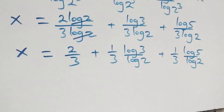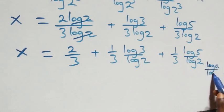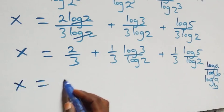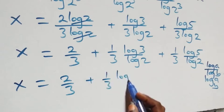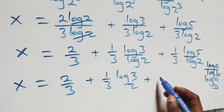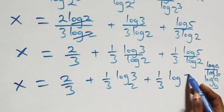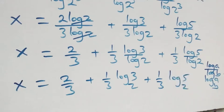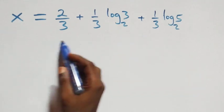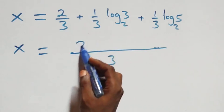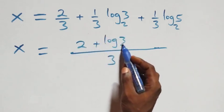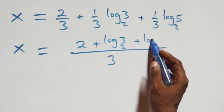Applying the change of base formula, where log a over log b can be written as log a to base b. What we have becomes x equals to two over three, plus one over three log three base two, plus one over three log five base two.